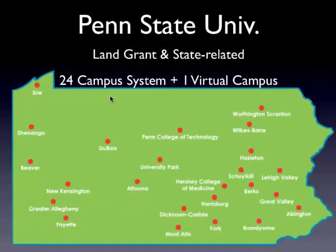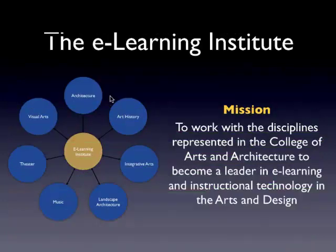Many of you may know this — we are a 24-campus system with one virtual campus spread throughout the state. We are a land-grant university, so we do fit under the federal regulation of making things accessible for our students. It's not only a good thing to do, but it is a requirement of us as well. We have taken this on very passionately and are doing what we can to streamline our efforts throughout our growth in online education.